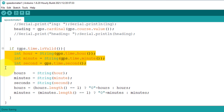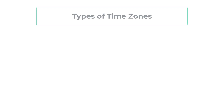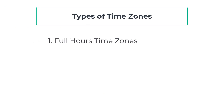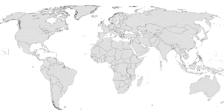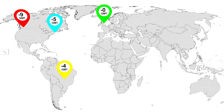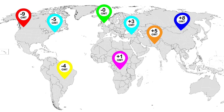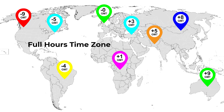Before writing any code, you will need to understand the basics of time zones. There are two types of time zones. The first one is full hours time zones. These time zones consist of a whole number of hours without any minute part, such as GMT minus 9, GMT plus 1, or GMT plus 5. As you can see, there is no minute part here, which is why these are called full hours time zones.